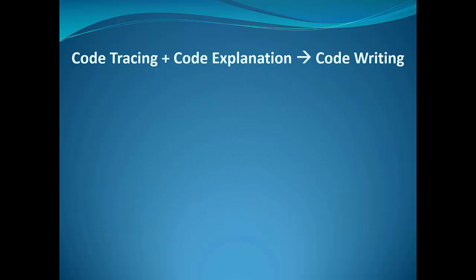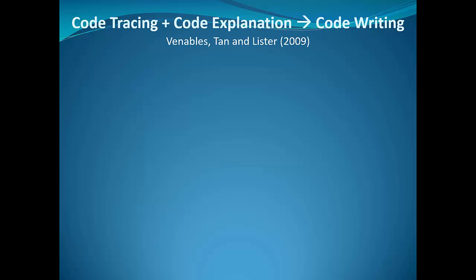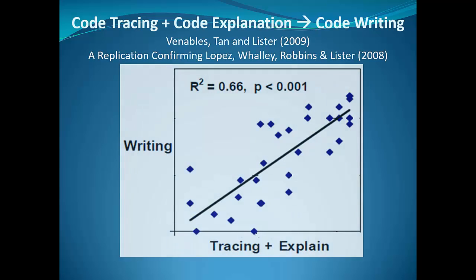To offer you some evidence for that, I'll present one piece from a paper I co-authored in 2009. What you see on the horizontal axis is how students performed on the code tracing and code explanation questions. On the left-hand axis is the students' performance on the code writing questions in that same exam at the end of their first semester. I've fitted a line through those data points.